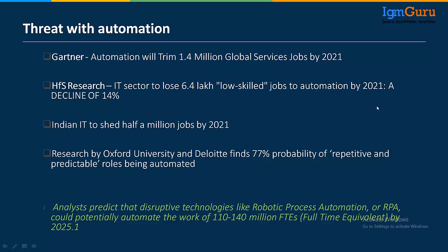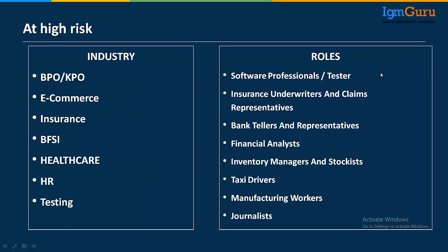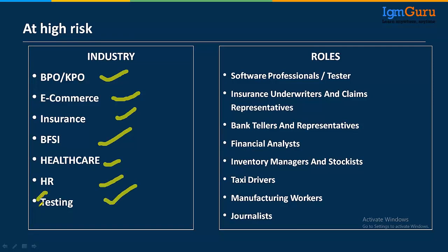That's one side of the story. Industries on high risk include healthcare, e-commerce, BPO, KPO, insurance, BFSI, HR, testing, and more. Roles at high risk include financial analyst, tax advisor, investment manager, software tester, and journalist — all of their work can be automated. Why hire such people, provide infrastructure, pay salaries and leaves, when a bot can handle it?